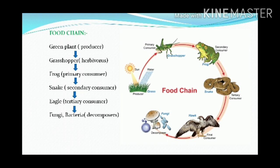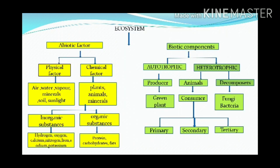There should be imbalance in the entire ecosystem and the number of prey and predator populations will change, and thus the food chain will come to an end. Now observe the chart of the ecosystem. It has two components: abiotic and biotic. Abiotic components have two factors — physical factors and chemical factors. Physical factors are air, water vapor, mineral soil, and sunlight. Chemical factors are nutrients and minerals, which are further classified into inorganic substances such as hydrogen, oxygen, nitrogen, calcium, sodium, and potassium.